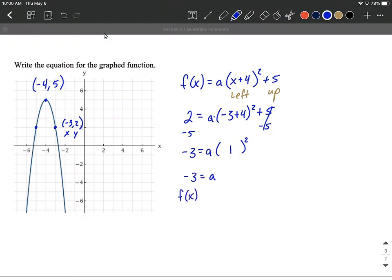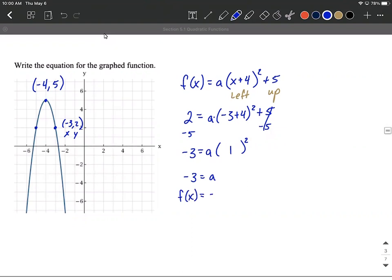So our function is actually going to be given by taking that a value and filling back into the initial function that we wrote. So -3 times the quantity (x + 4)² + 5.